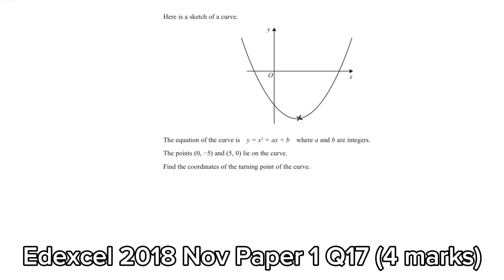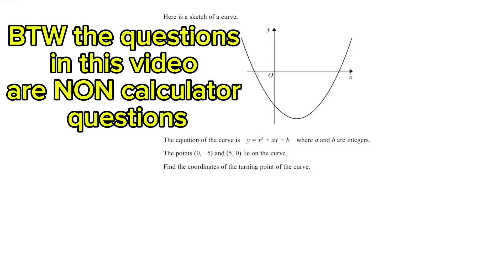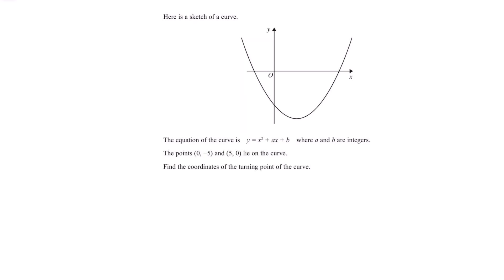In this question, we're given a sketch of a curve and told the equation of this curve is x squared plus ax plus b. It's a quadratic, but we don't know what a and b are. We are told that two points, (0, −5) and (5, 0), lie on this curve. We're given a sketch of this quadratic and we want to find the turning point of this curve.